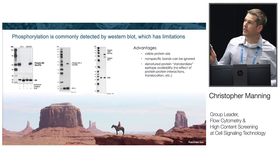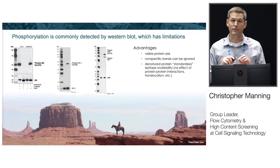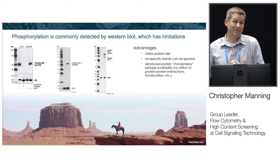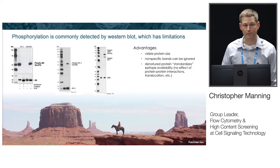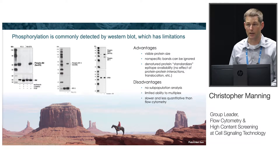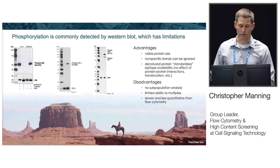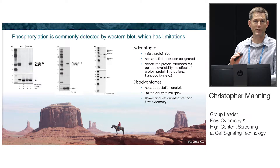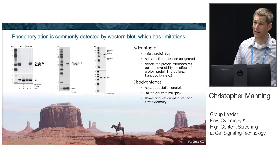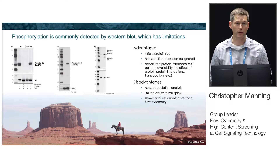But there are disadvantages to Western blot. The largest is that you can't analyze subpopulations — which you clearly can do by flow. It's more difficult to multiplex, especially if you have proteins of similar molecular weight, and it's slower and less quantitative than what you can accomplish using flow cytometry.